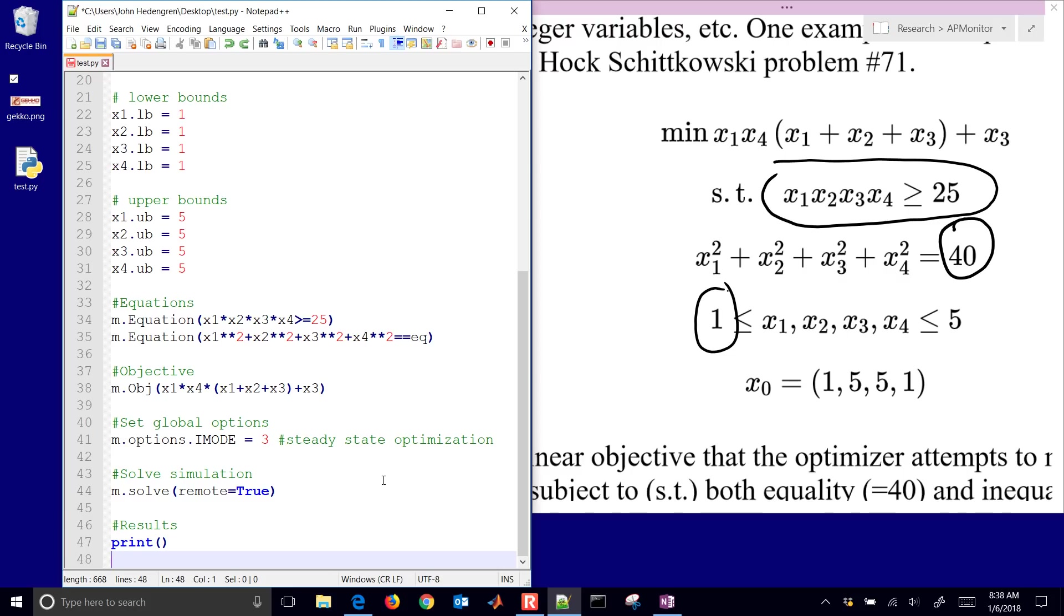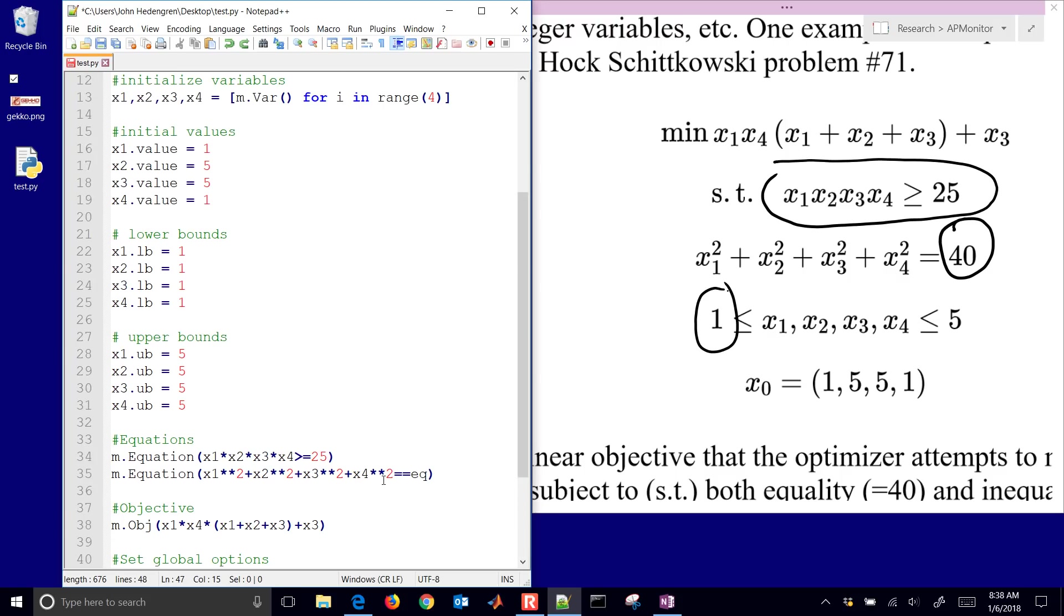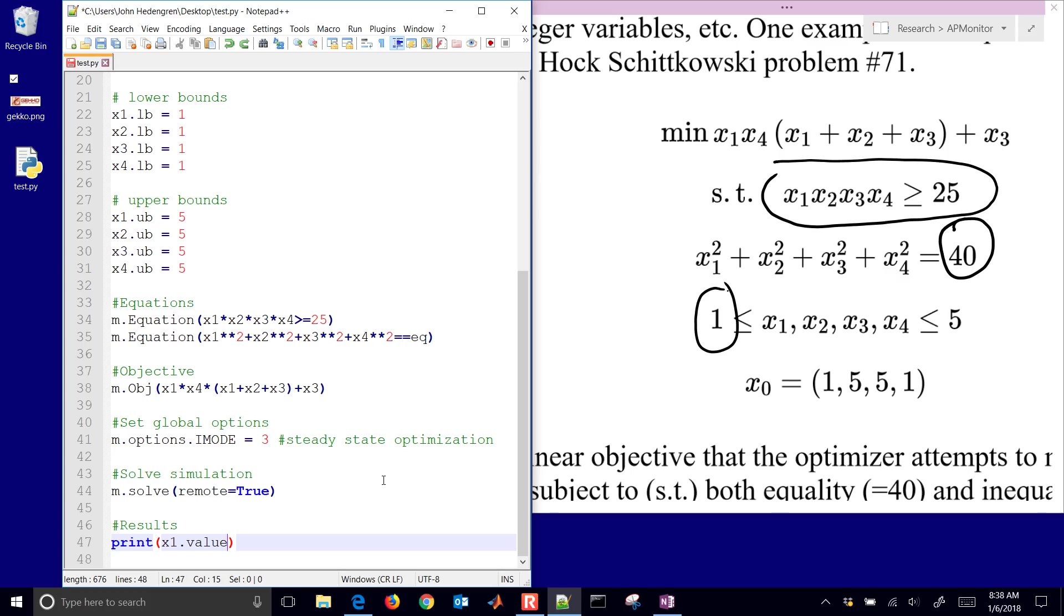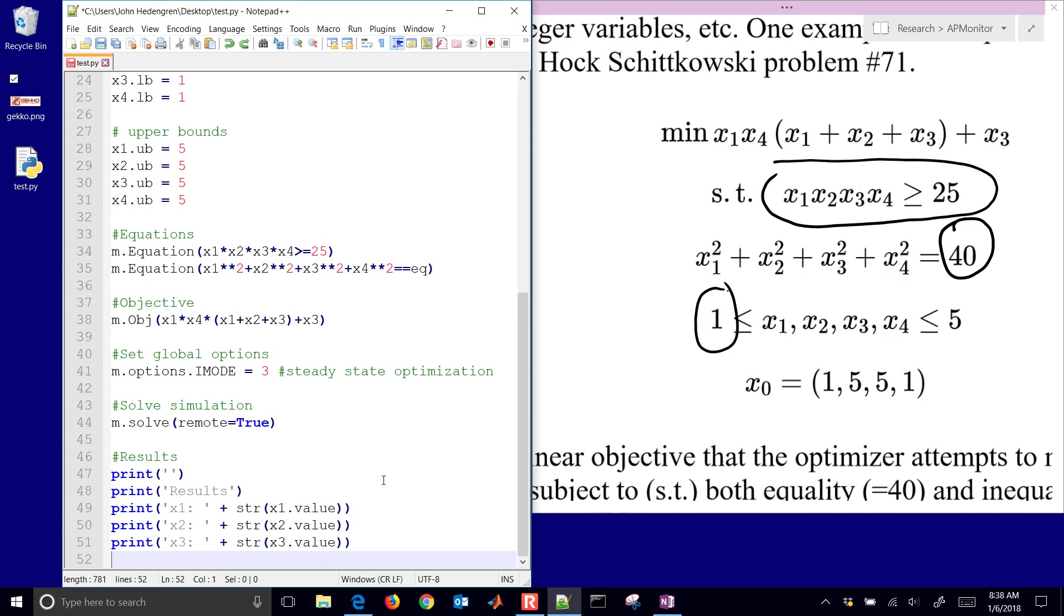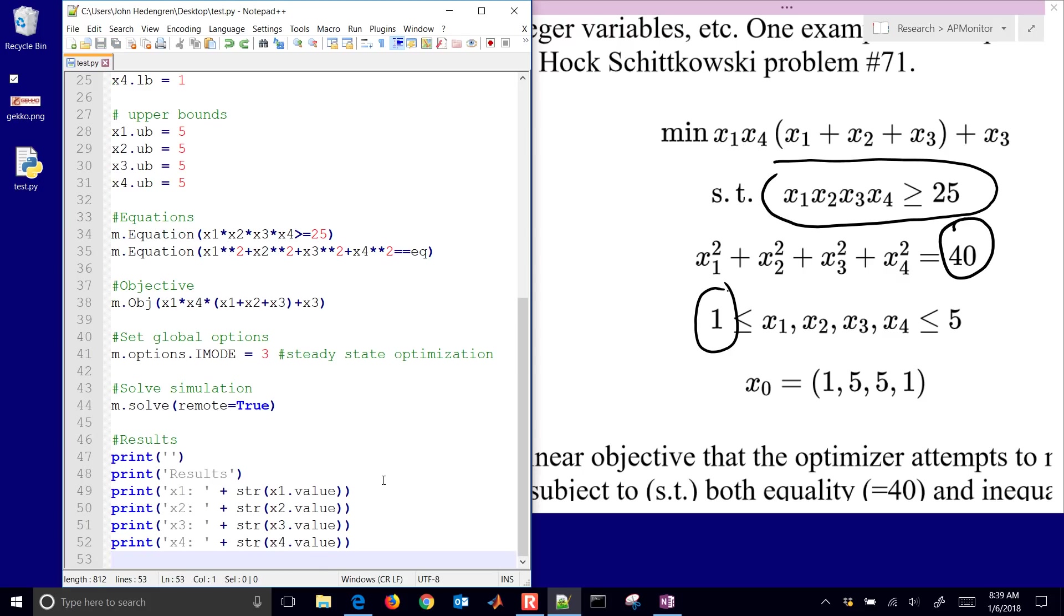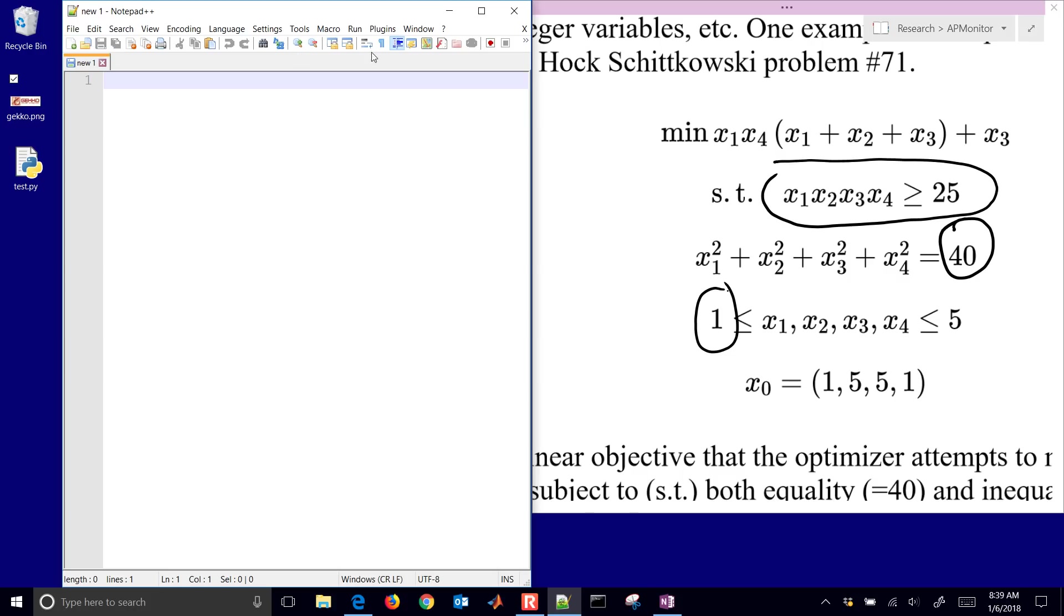Okay, and then we want to print some results. I'll just print the x1.value. Similar to how we had set it before, the initial values, it will be returned and we'll be able to print that. I can also make this just a little bit prettier in the printing. x1, x2, x3, and x4. Okay, so let's run this now and see the output that it gives us.